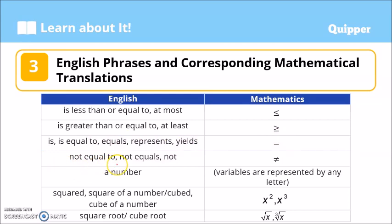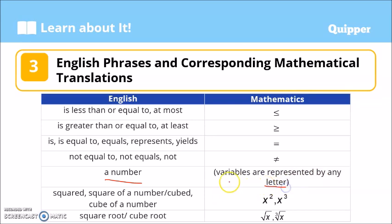'Not equal to,' 'not equals,' or 'is not' corresponds to the not-equal symbol, which is the opposite of the equal sign. When you encounter 'a number' in a sentence, it is represented by a variable — any letter such as x, a, b, c, and so on from the English alphabet.